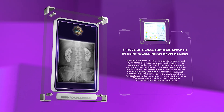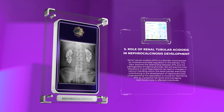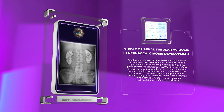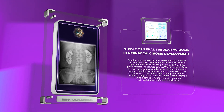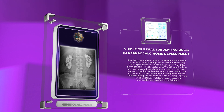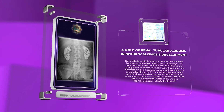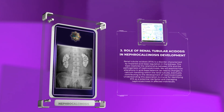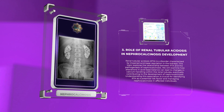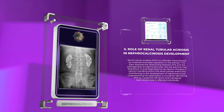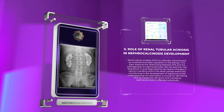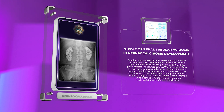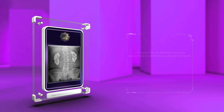Renal tubular acidosis (RTA) is a disorder characterized by impaired acid-base regulation in the kidneys. This topic explores the relationship between RTA and the pathogenesis of nephrocalcinosis. We will examine how alterations in acid-base balance can lead to changes in calcium handling within the renal tubules, eventually contributing to the development of nephrocalcinosis.